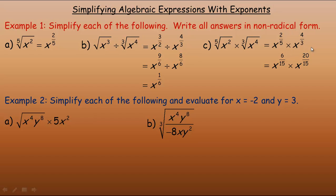So 3 times 2 is 6. The denominator here is 3, so to make it a 15, I want to multiply by 5. So 4 times 5 would be 20. Now, we're multiplying, so we add the two exponents. So 6 fifteenths and 20 fifteenths would be 26 fifteenths. So this would be x to the 26 fifteenths.